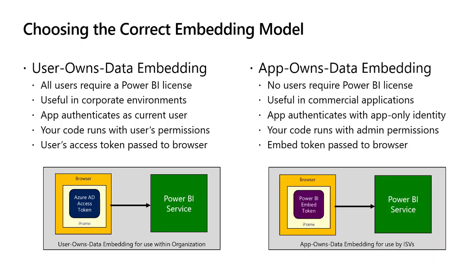The second model is the app owns data embedding model. The big benefit here is that you can target users that don't have Power BI licenses and don't even have Azure AD accounts — Microsoft knows nothing about them. You authenticate with an app-only identity that has admin permissions on whatever target workspaces you want to access. This brings up a huge issue of taking a very powerful access token and passing it back to the browser, so instead we use something called an embed token.